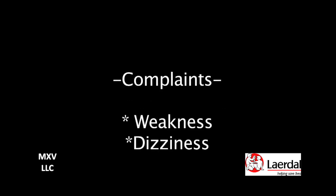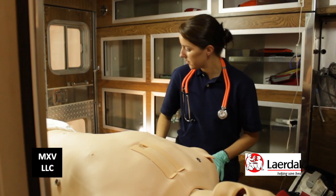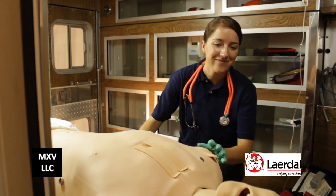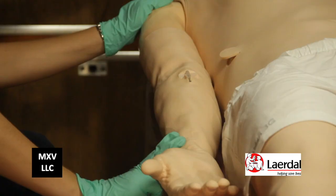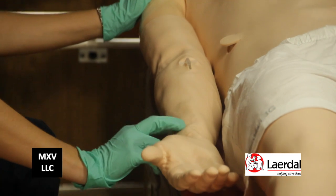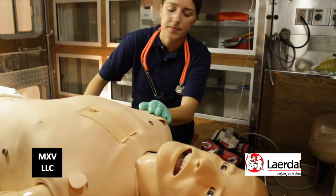Upon arriving at the scene, the paramedic does a quick scan to ensure there is no danger. She introduces herself to the patient to assess AVPU and ABCs, while placing a hand on his shoulder to comfort him and the other hand on his wrist to complete a rapid radial pulse check.